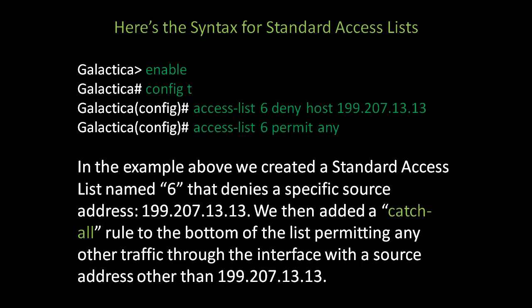The next thing to do is add the catch-all at the bottom. If you didn't, then no other traffic would go out of that interface because nothing else would match a rule. So you have to create a rule that matches all other packets that don't come from 199.207.13.13, and those you choose to permit through that interface. That last rule is the catch-all.